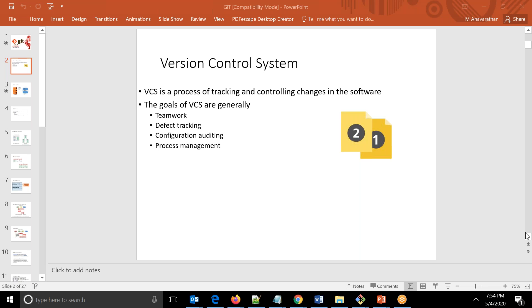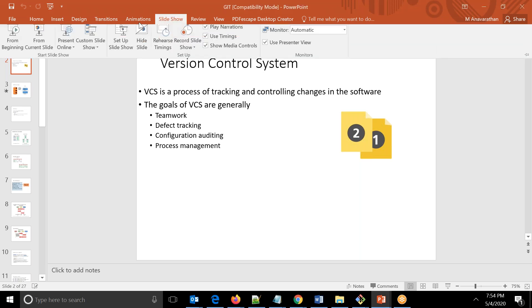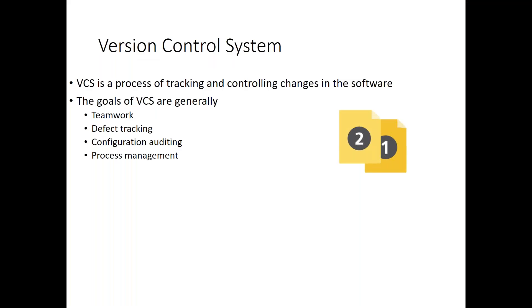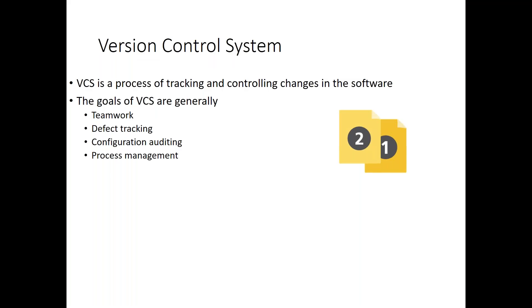Before I get into Git, let me first explain the terminologies we will be using in the version controlling system. Before I move further, is there any question for those who don't understand what is a version controlling system? Is it clear, or any questions on what is a VCS and why it is now important for everyone in the culture of DevOps?